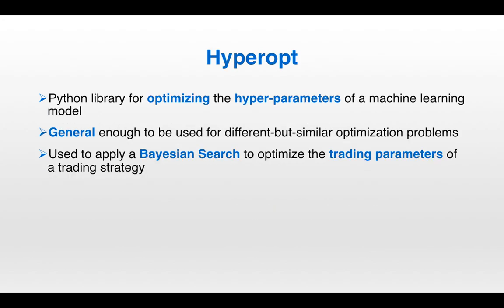Another important Python library is the Hyperopt library. This is the library for optimizing the hyperparameters of a machine learning model, but it is general enough to be used for different but similar optimization problems. We drew an analogy between the optimization of hyperparameters of a machine learning model and the optimization of the trading parameters of a trading strategy. Indeed, we use Hyperopt in order to apply a Bayesian search to the problem of optimizing a trading strategy's parameters.